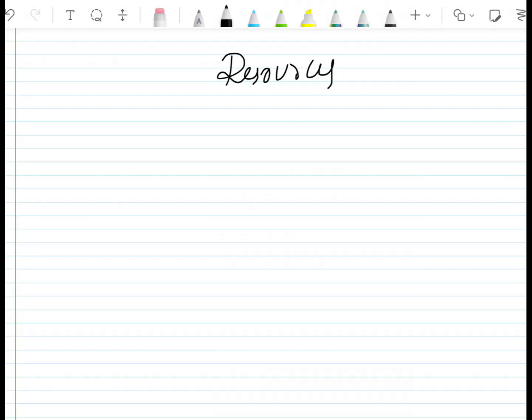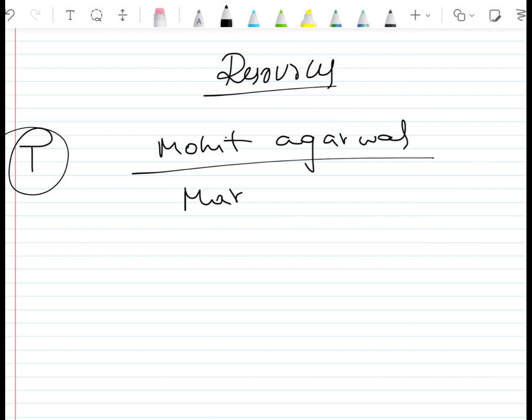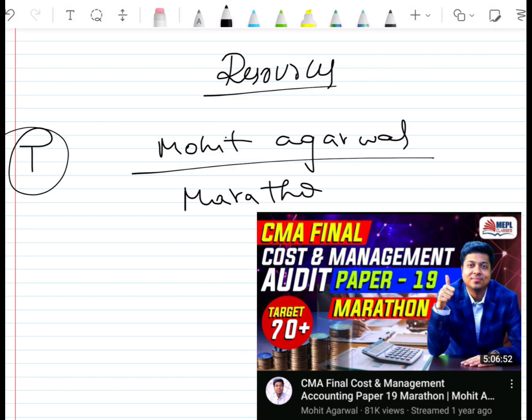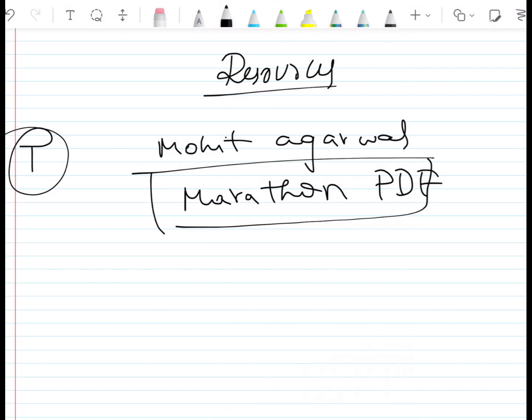Now, regarding available resources. First, for the three A+ chapters, we have sufficient time. On YouTube, we have marathon sessions available. In this video description, you can access the Marathon PDF. If you choose this PDF, it is more than enough. Every question is explained point-wise. Next, for practical chapters, we have material in the institute.